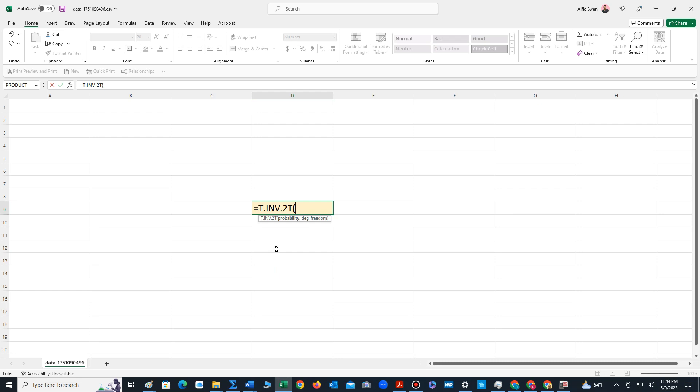Or you could also just type it out yourself. Now it's asking for the probability. If you recall 93 percent was given, we need 1 minus 0.93, which is 0.07. Then you place a comma.